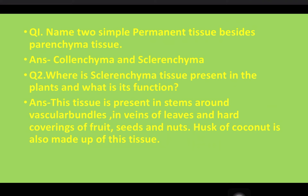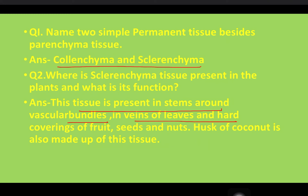Now let's go through the question answers. First question: name two simple permanent tissues besides parenchyma — that is colenchyma and sclerenchyma. Second question: where is sclerenchyma tissue present in plants and what is its function? This tissue is present in stems around vascular bundles, in veins of leaves, and in hard coverings of fruits, seeds, and nuts. The husk of coconut is also made up of this tissue.